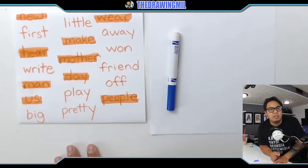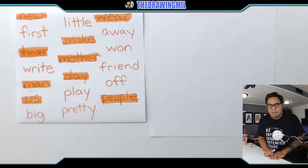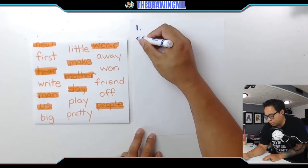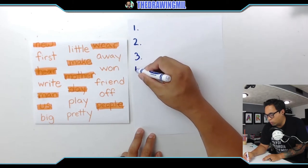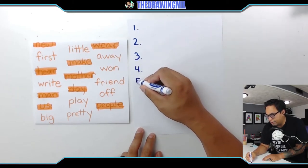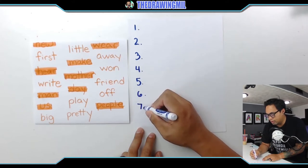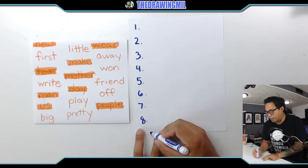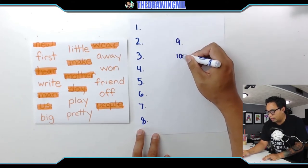So what you're gonna do right now is either on a blank sheet of paper like how I have over here, or on a whiteboard with a dry erase marker, you can write down numbers 1 through 10. So you guys can do it with me if you'd like. I'm gonna go 1, 2, 3, 4, 5, 6, 7, 8. If you run out of room, just go above 9 and 10 and then start a new column just like that.